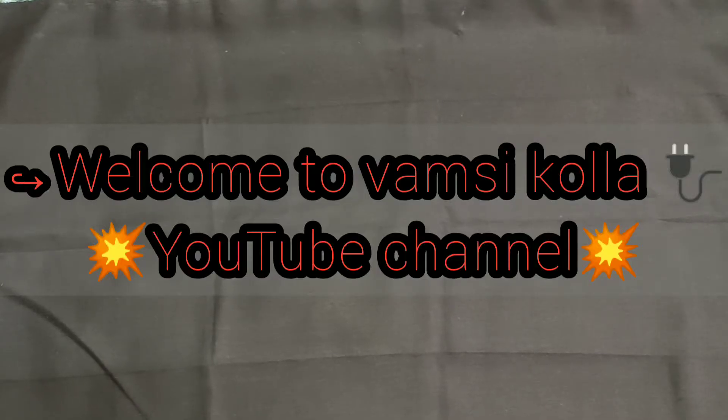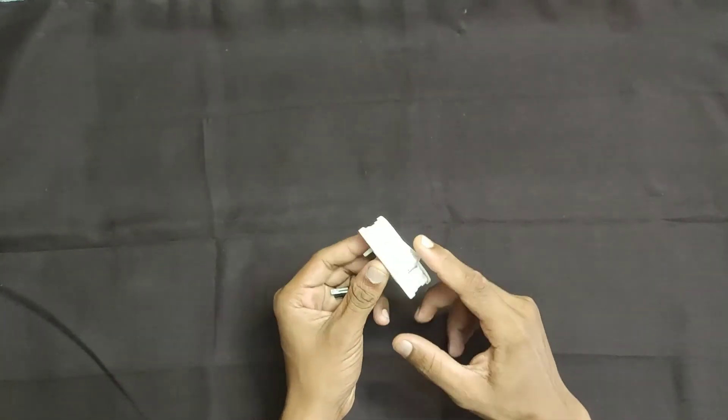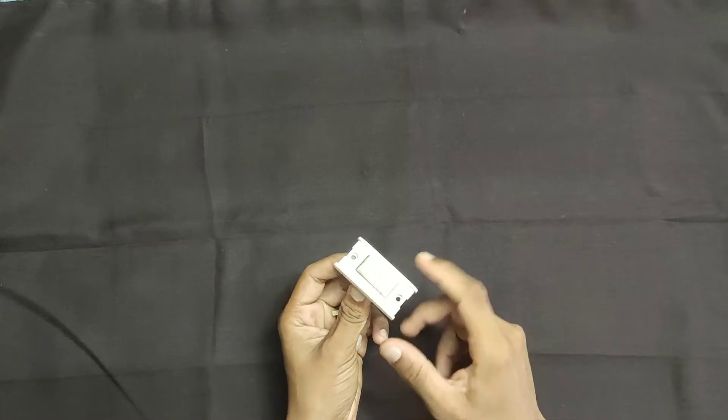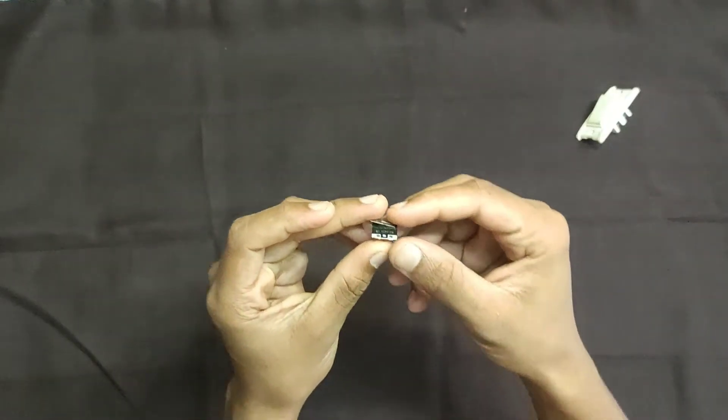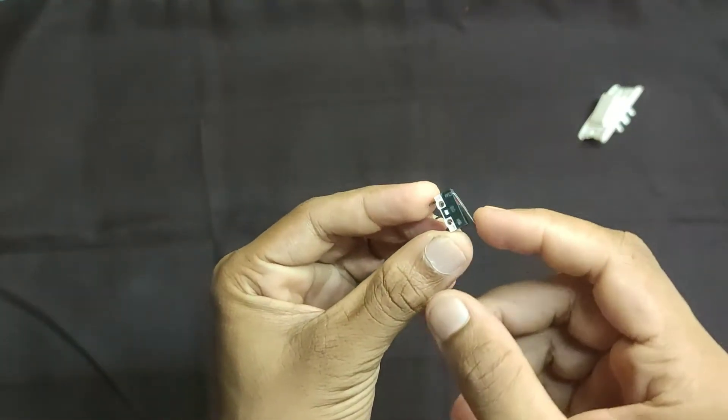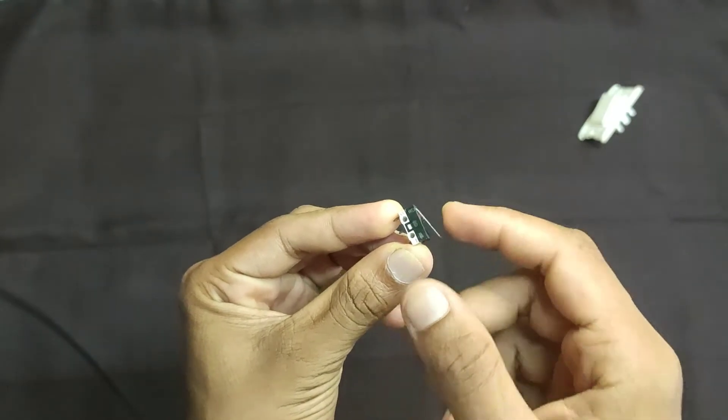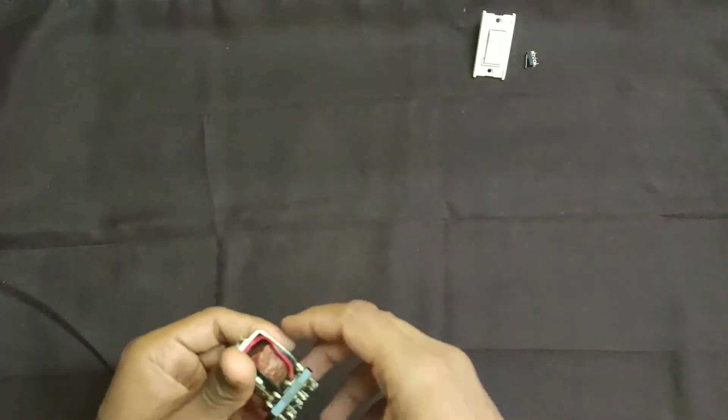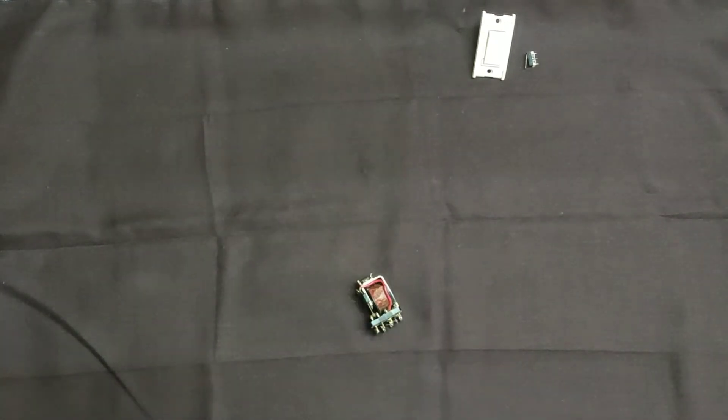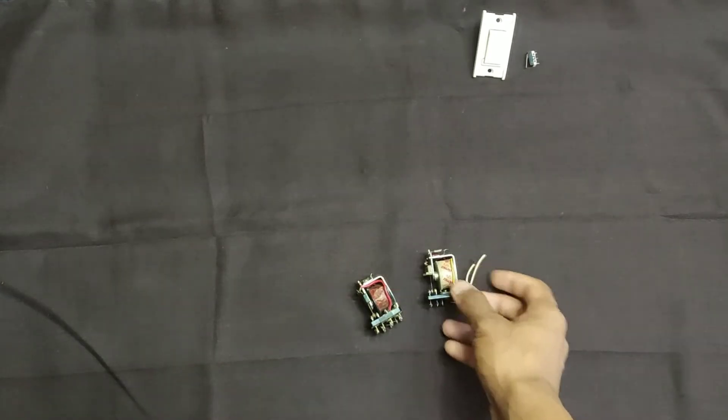Welcome to VAMZEKOLA YouTube channel. What is relay? A relay is nothing but a switch like this or maybe like this. Then what is the difference between normal switch and a relay? A relay is also a switch but which controls, means opens or closes the circuit electromechanically, is called as relay.